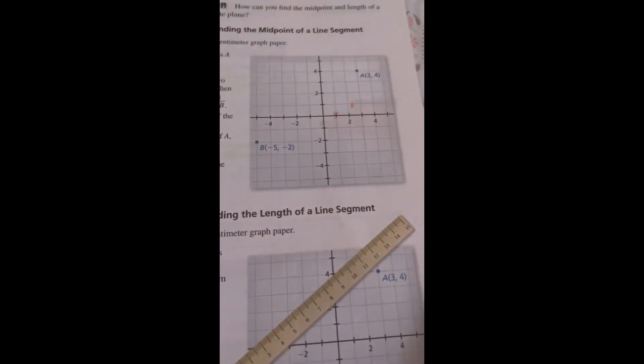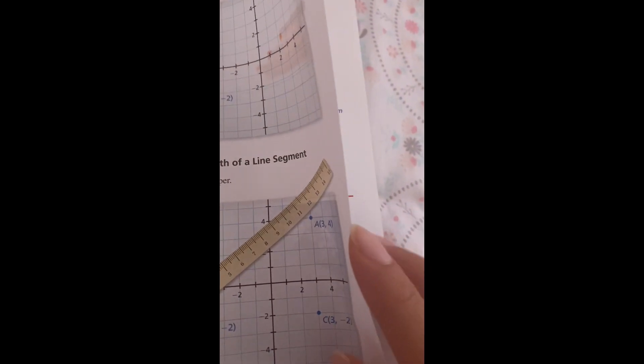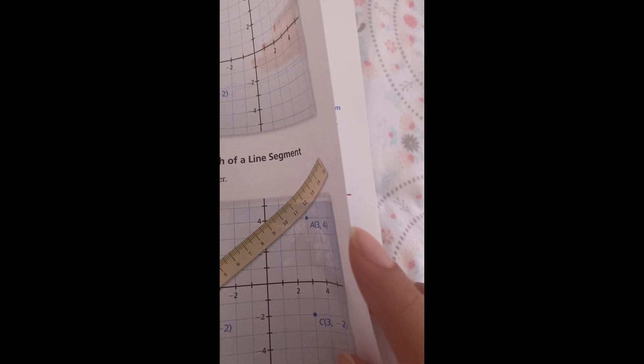1.3 Using Midpoint and Distance Formulas. Making Sense of Problems: To be proficient in math, you need to check your answer and continually ask yourself if this makes sense. Reading: The word bisect means to divide into two equal parts.